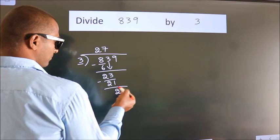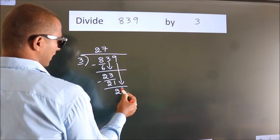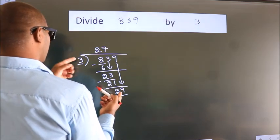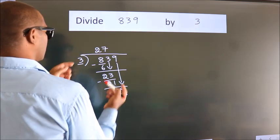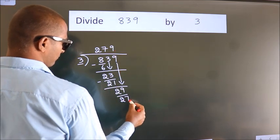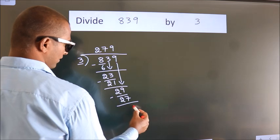After this, bring down the beside number. 9 down. So, 29. A number close to 29 in 3 table is 3 9s, 27. Now, we subtract. We get 2.